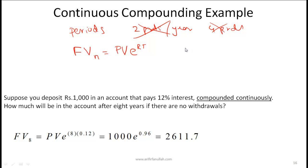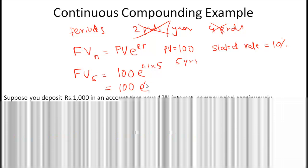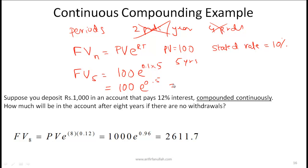Let's take a very simple example. Let's say that you start with $100, so that's the PV, and the stated interest rate is 10%. What will happen after five years? The future value after five years will be equal to 100 times e to the power of 0.1 times 5, which is 100 times e to the power of 0.5, which equals 164.87.